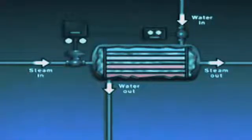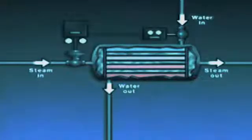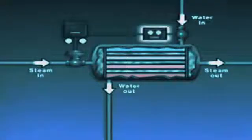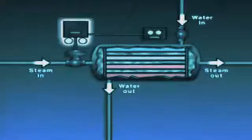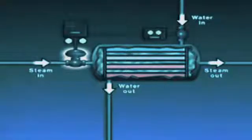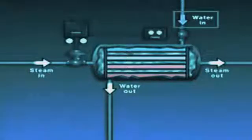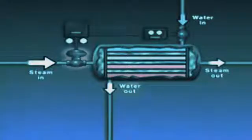The feedforward control system works like this: if the temperature of the water entering the heater changes, the primary element — a temperature-sensing bulb — detects the change and alters the signal sent to a transmitter. The transmitter sends a proportional signal to a controller, which compares it to set point. If there's a difference, the controller sends a signal to the control valve. If the temperature of the inlet water decreases, the control system opens the control valve to increase steam flow to the heater, providing more heat and preventing the outlet water temperature from dropping below its desired value.